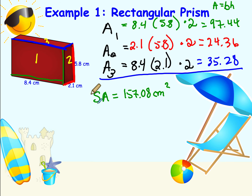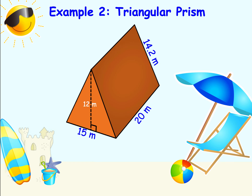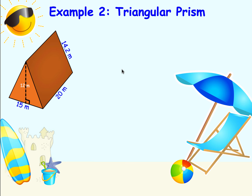Next, we're going to determine the surface area of the triangular prism. For this one, I'm going to draw the net. The advantage of drawing a net is that you can see all the different parts and label them. Remember, this triangular prism has a bottom rectangle, a triangle in the back, and another rectangle on the left side — so three rectangles and two triangular faces.